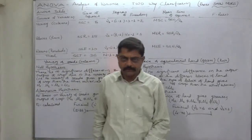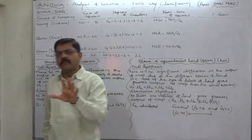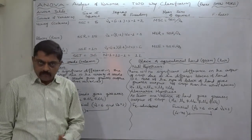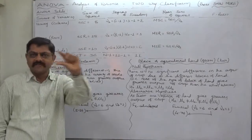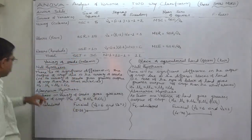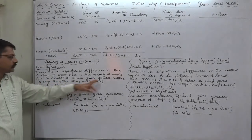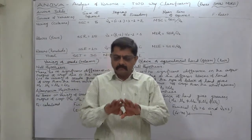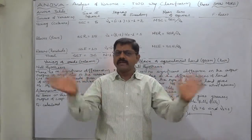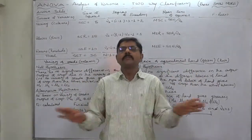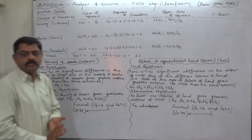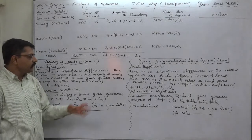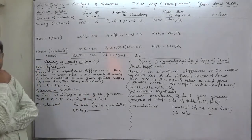The null hypothesis is: there is no significant difference in the output of crop due to the variety of seeds. Specifically, this means no variety of seeds gives greater output of crop than the other varieties. We believe that more or less all three varieties are the same so far as the average output is concerned — there is not much considerable difference between the output of all three varieties.